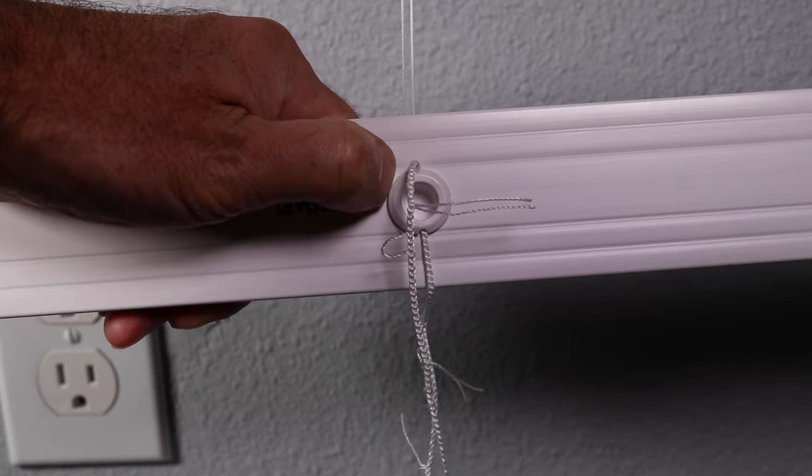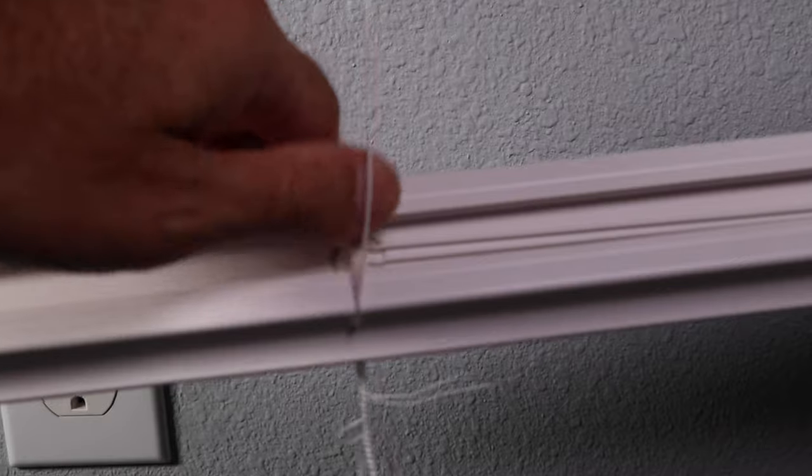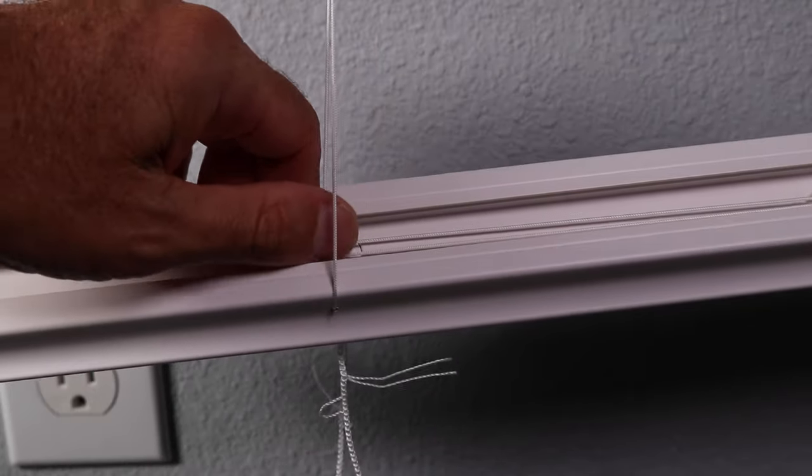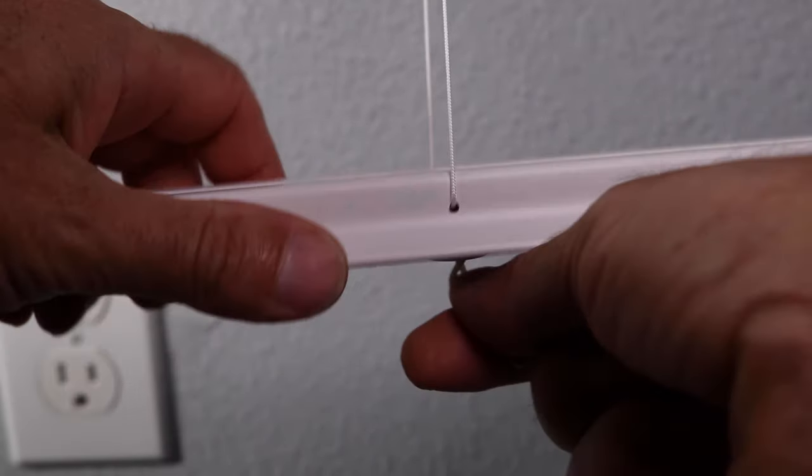And if you don't want to do that, the easiest thing I have found to do is take your thumb and push on one side of the button like so and grab these two strings and pull at the same time and that button will come out of there.